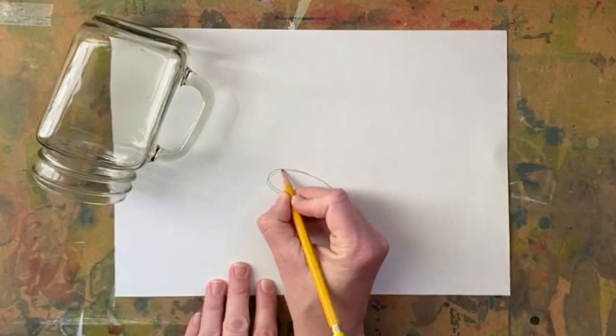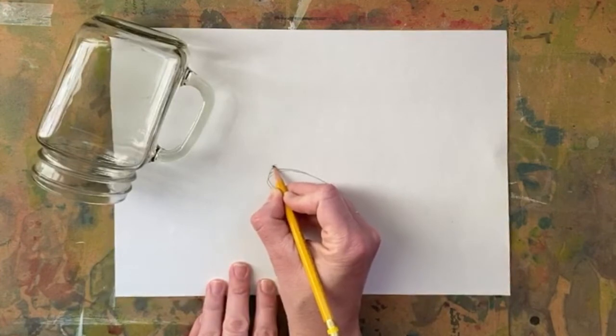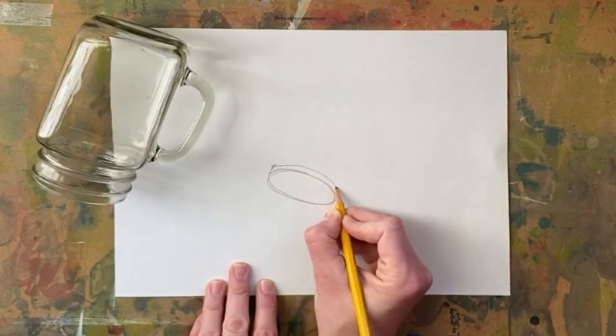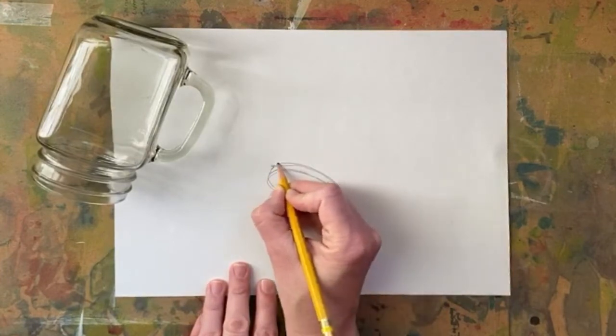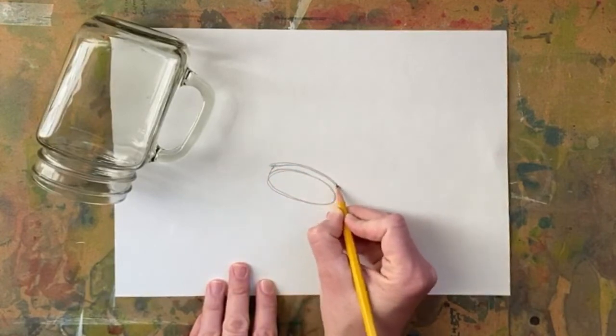A continuous line contour drawing is a drawing where you do not lift your pencil off of the paper. You draw your subject with one continuous line. Other than that, there aren't many rules to a continuous line contour drawing.